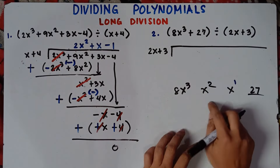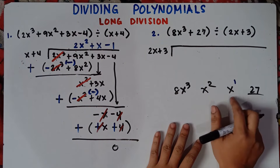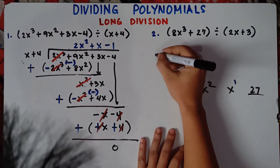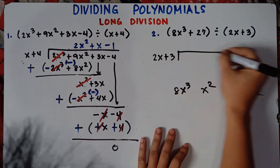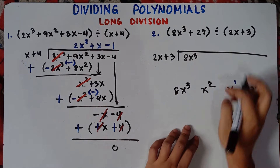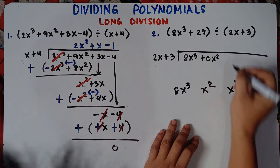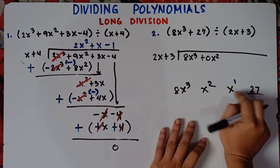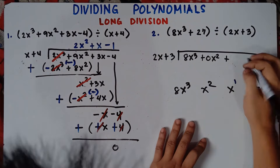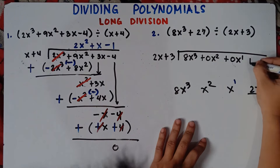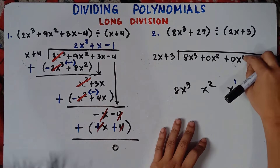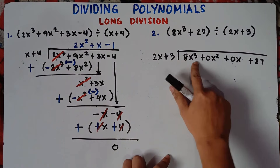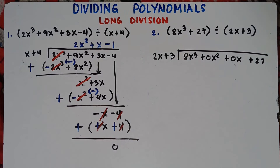Since we don't have the quadratic term or the linear term, we write placeholder zeros. Write the dividend as 8x³ + 0x² + 0x + 27. This ensures all degree positions are accounted for before we begin dividing.